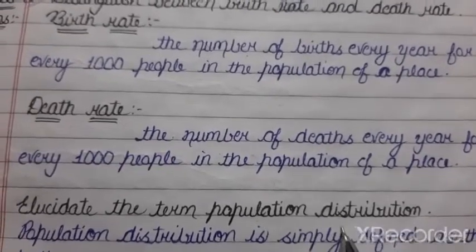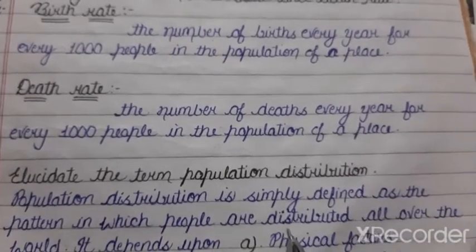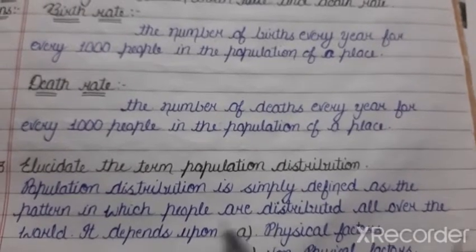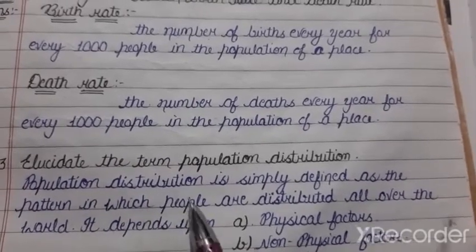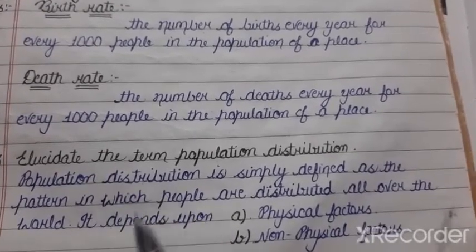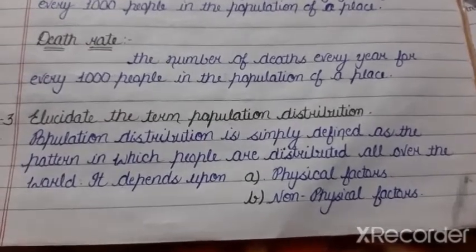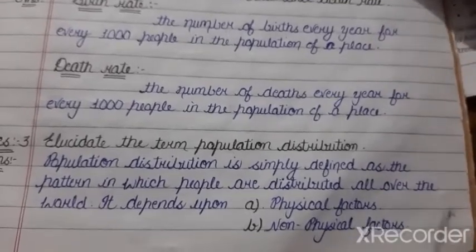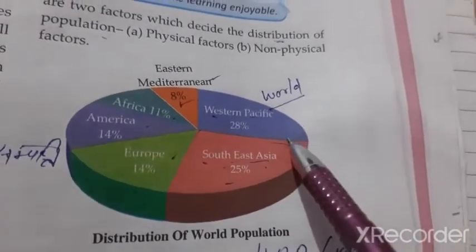Question three is: elucidate the term population distribution. Population distribution is simply defined as the pattern in which people are distributed all over the world. It depends upon physical factors and non-physical factors. Students can also understand this concept with the help of the diagram given in your book showing the distribution of world population.